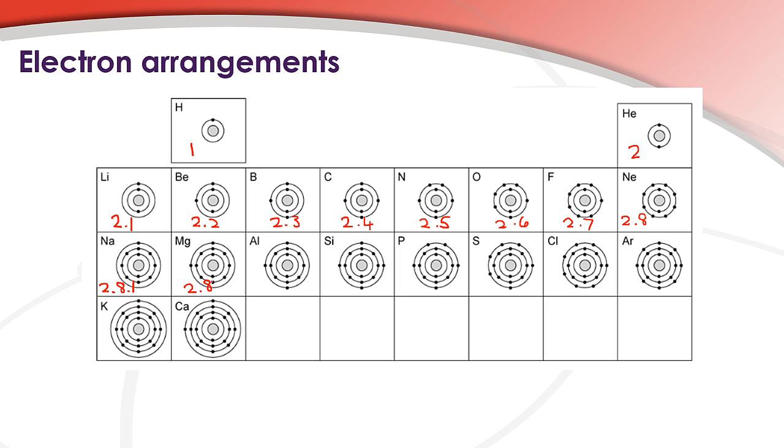Magnesium 2.8.2, aluminium 2.8.3, silicon 2.8.4, phosphorus 2.8.5, sulfur 2.8.6, chlorine 2.8.7 and then to the noble gas argon 2.8.8, and then we're on to the next energy level.